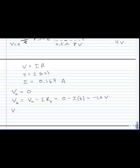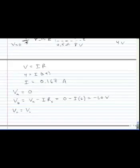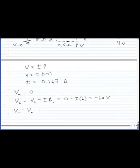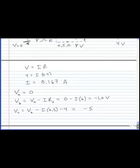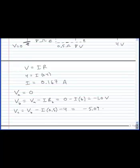The voltage at C is going to be the voltage at B minus I times half an ohm minus 4. We're going backwards through the battery from the high side to the low side. I get negative 5.09 volts for the voltage at point C.